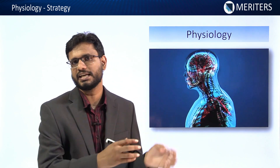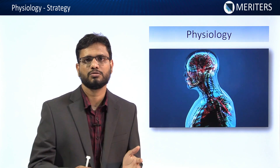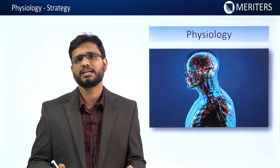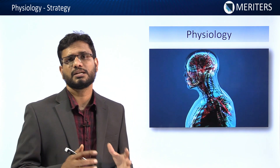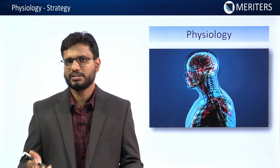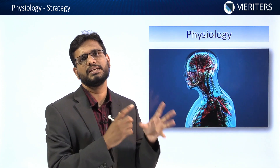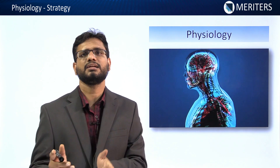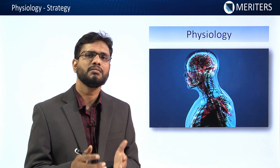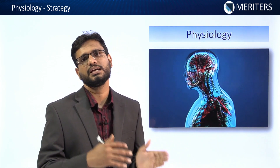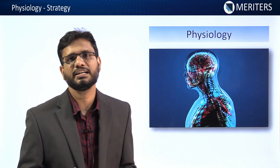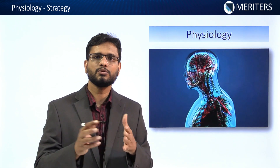Once you are done with GIT physiology, you can go through CVS, CNS, respiratory, and renal systems. When you come to pharmacology and take a system like GIT, come back to the physiology, read the basic physiology of GIT, and then try to understand the mechanism of the drug. Same way when reading medicine, come back to physiology to understand how treatment restores normal physiology.